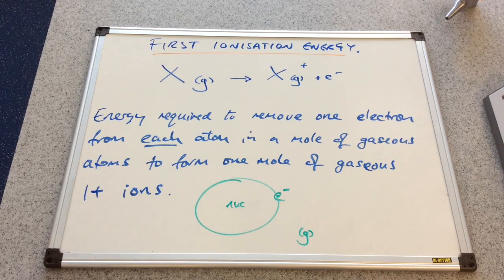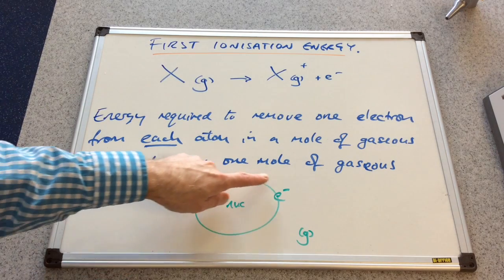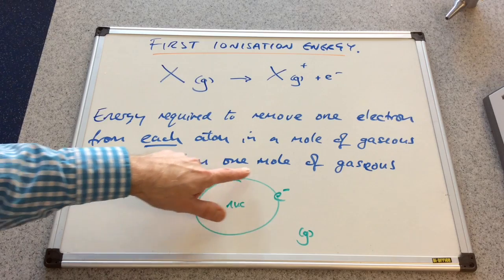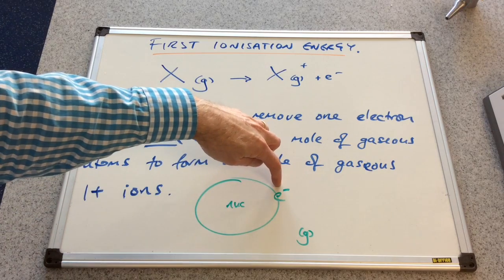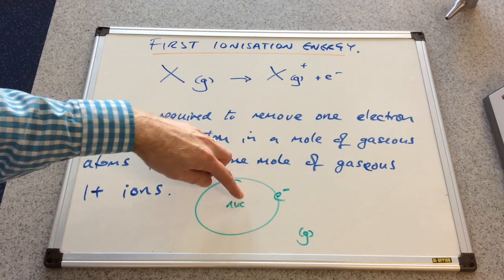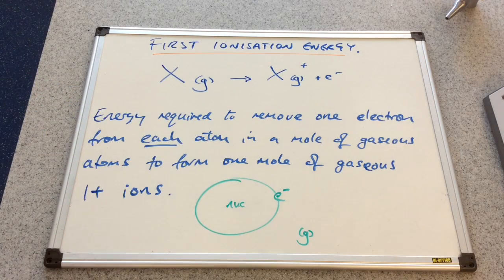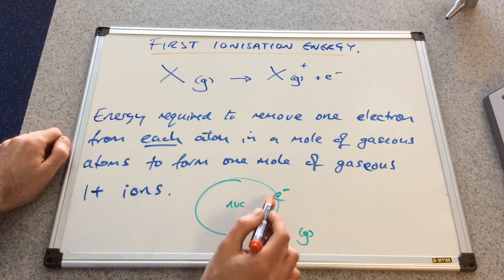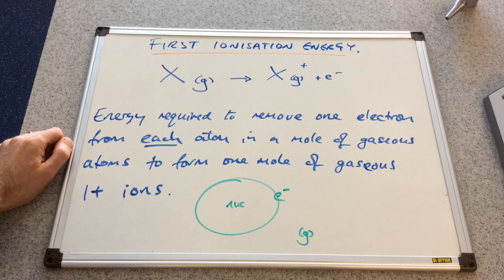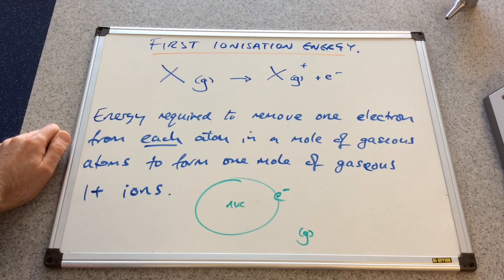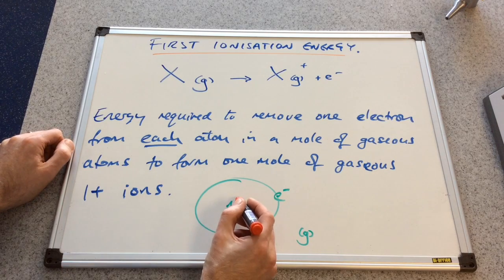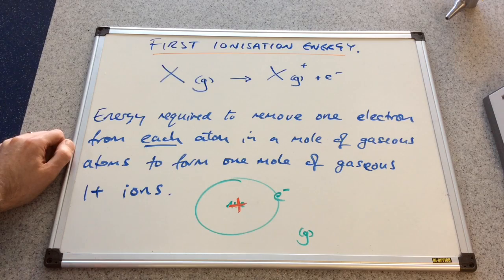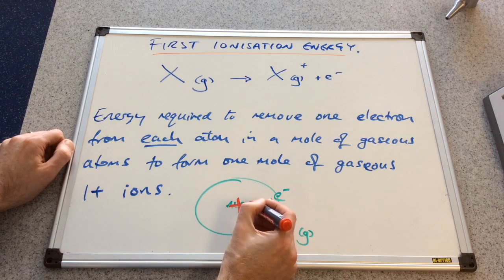I've drawn a little diagram there. At the bottom in green we've got the atom represented by this shell with the outermost electron with the nucleus. So why does energy need to be supplied to get this electron out? There's going to be an attraction between the nucleus and the electron because what's in the nucleus? Protons and neutrons. Protons have a positive charge, neutrons have no charge, and so the nucleus is positively charged — and therefore these will attract each other.